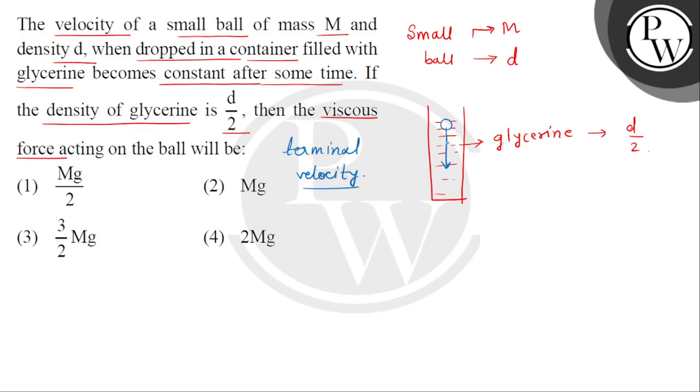अब यहाँ पर जब इसमें terminal velocity को acquire किया, तब इस पर कौन कौन से forces balance हो चुके थे. The very first force is the weight of this ball, the second force is the upthrust, जिसको हम buoyant force भी call करते हैं,